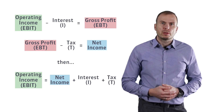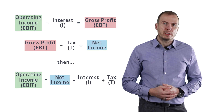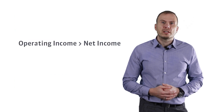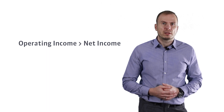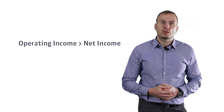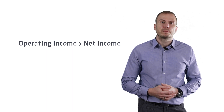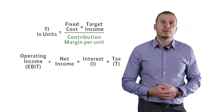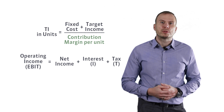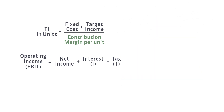The target income expressed as net income is less than target income understood as operating income. Let's look at the formula again. If we put a lower value in the numerator, the number of pots will change — a smaller value in the numerator would mean you could sell fewer pots to meet your target income.